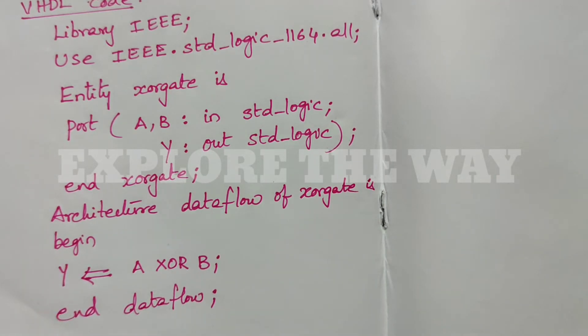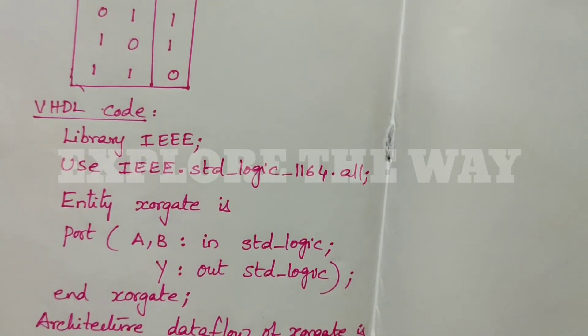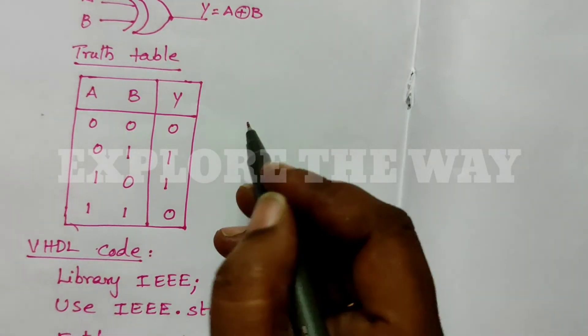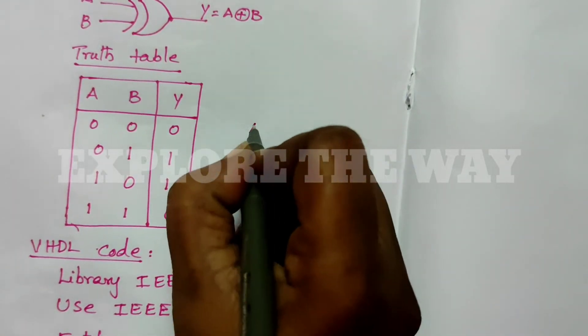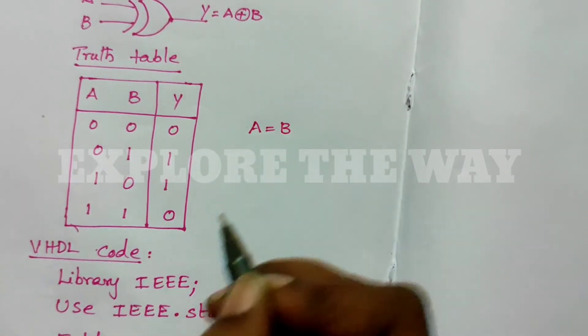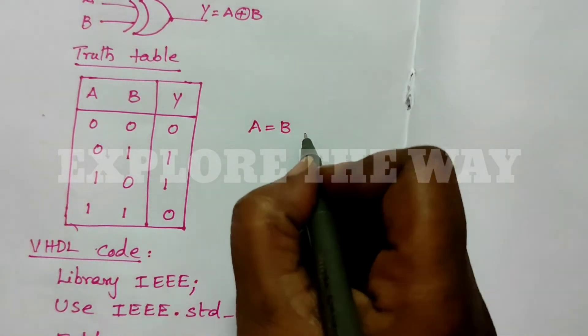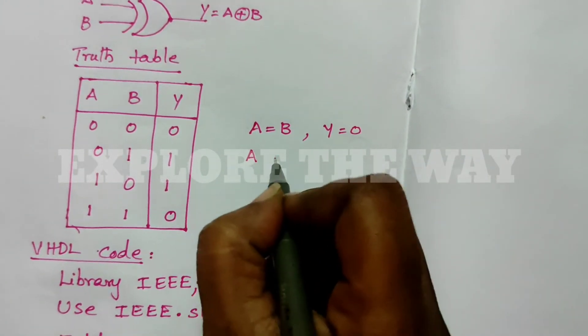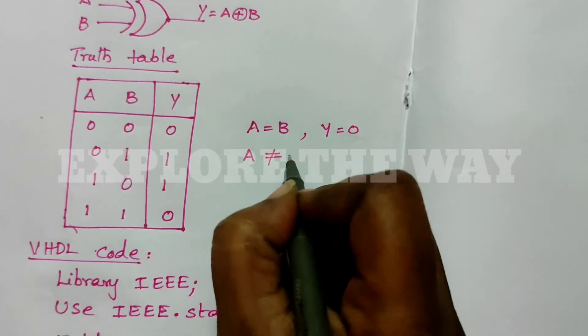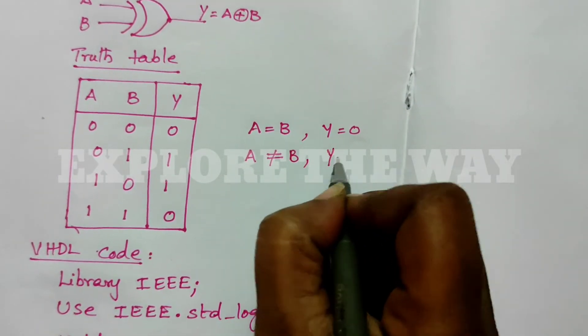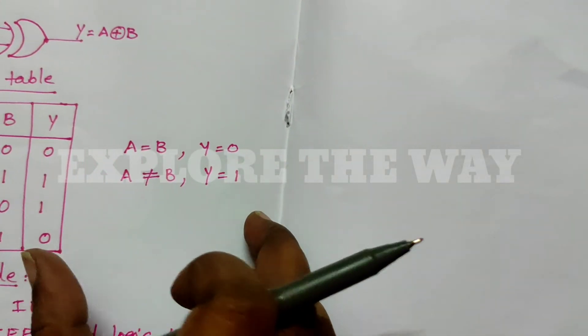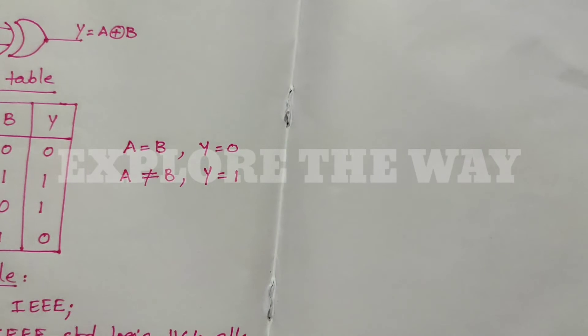Now I will write the same XOR gate in behavioral style. Let us analyze the behavior of the XOR gate. When the inputs are the same, the output is 0. When the inputs are not equal, the output is 1. This is the behavior. Now we will write this behavior in behavioral style.